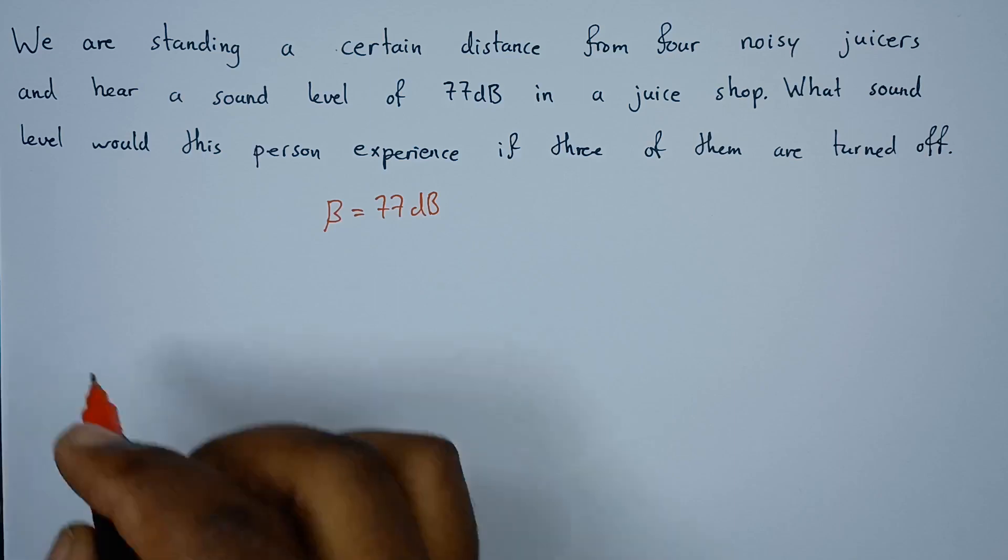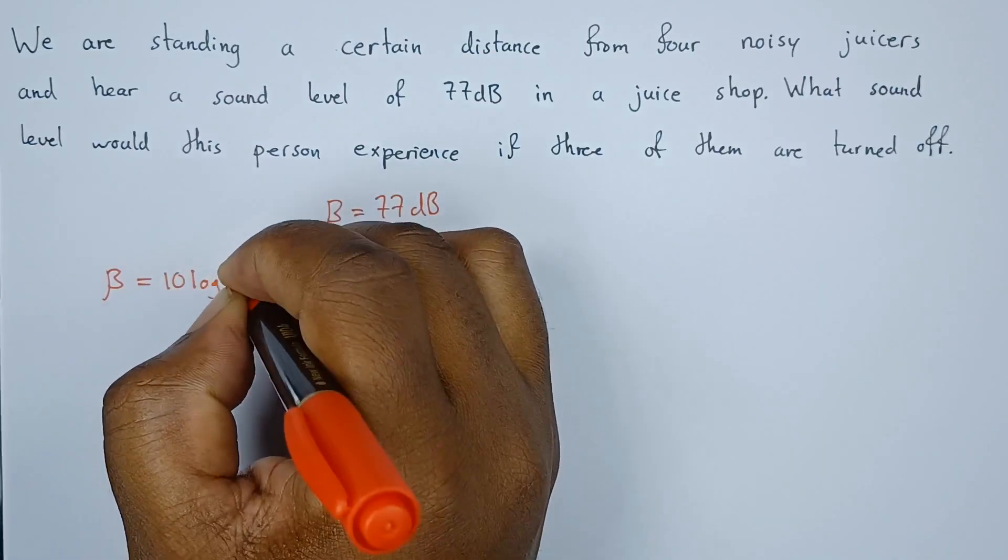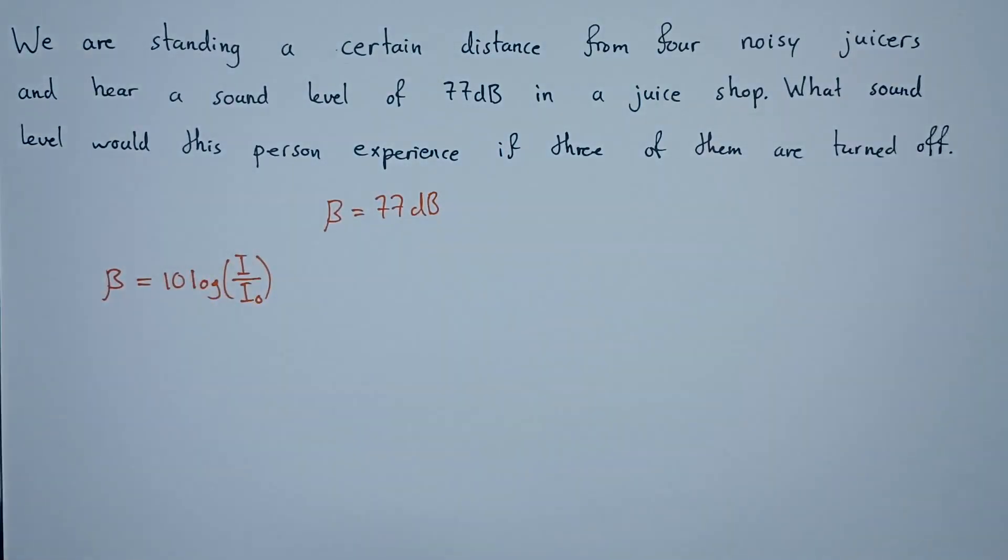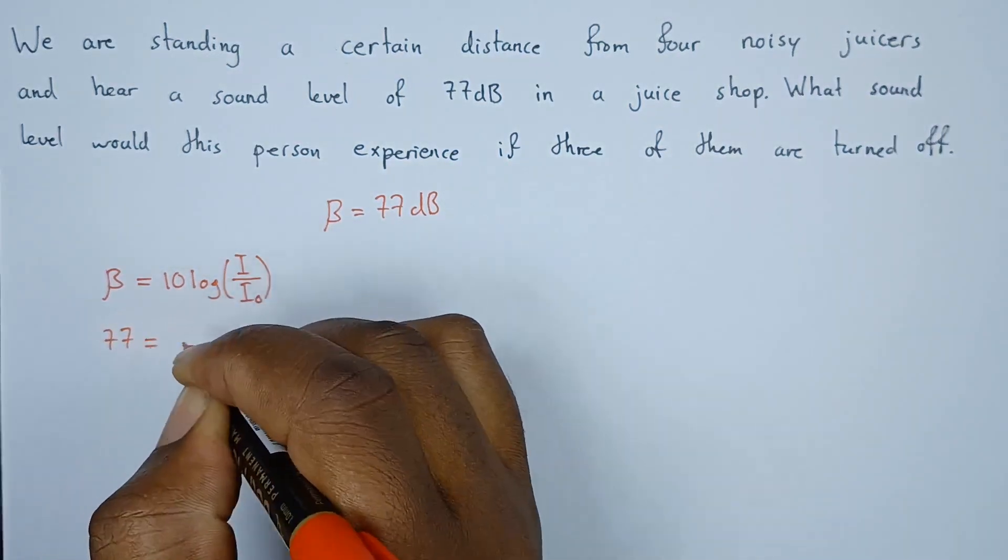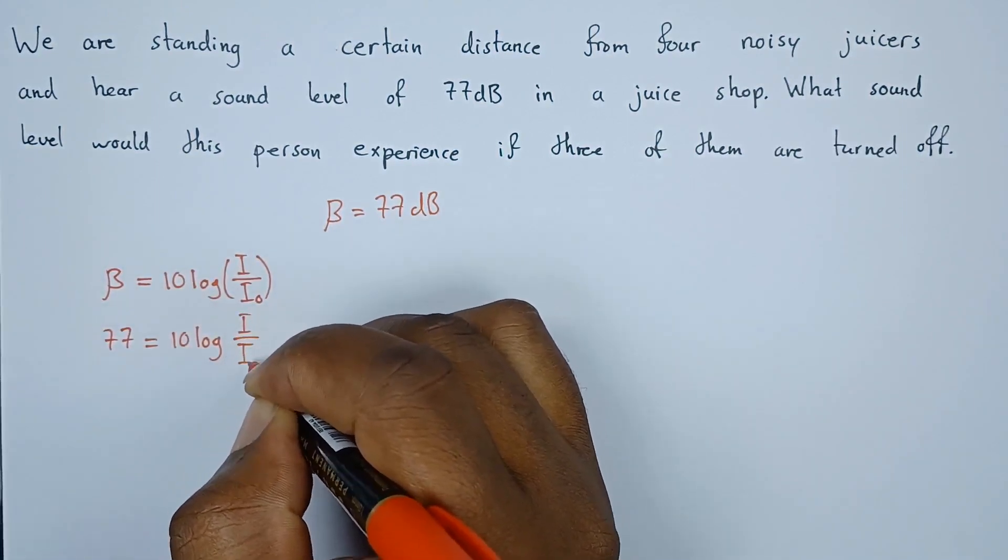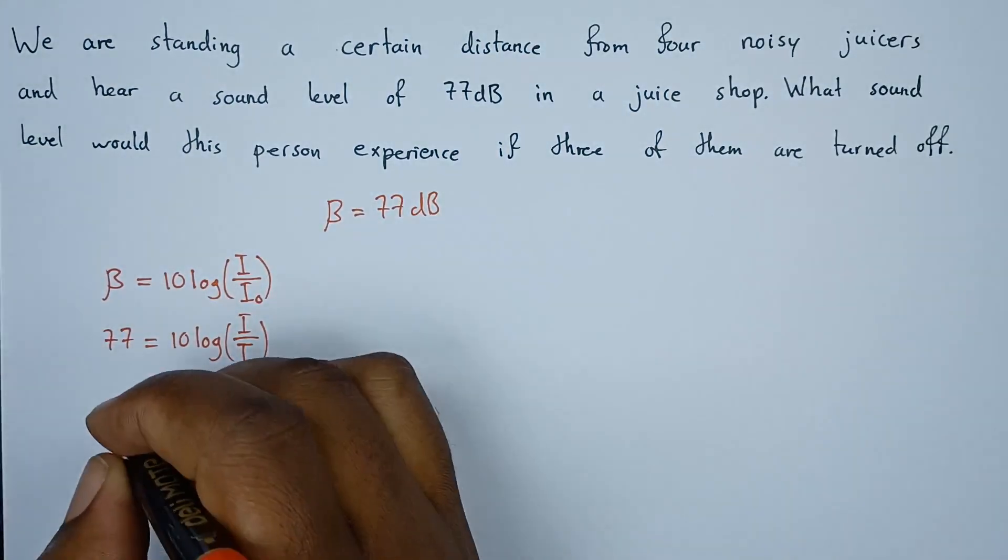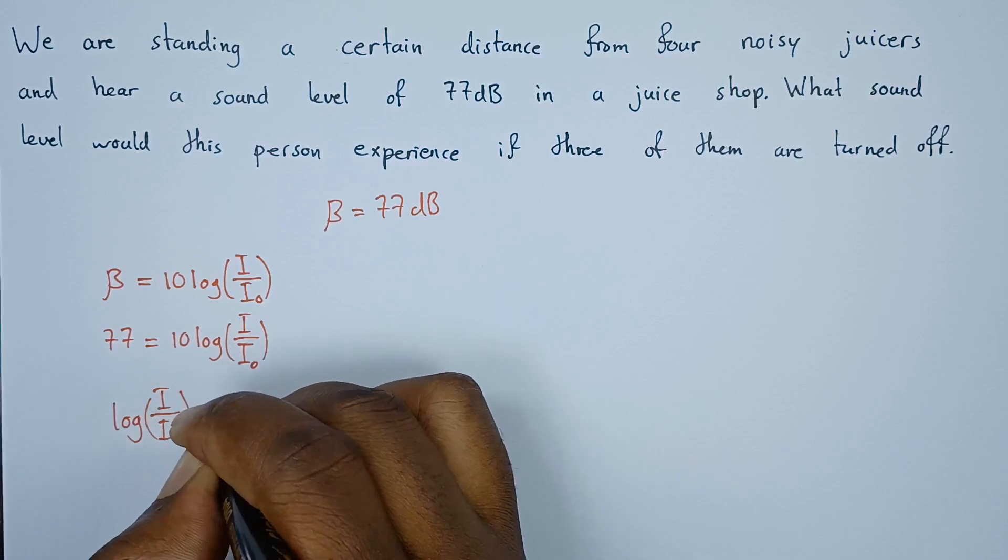The level of intensity beta is given by the formula 10 log I over I naught, where I is the intensity while I naught is the threshold of intensity. So 77 equals 10 log I over I naught. We can divide both sides by 10, so log I over I naught equals 7.7.